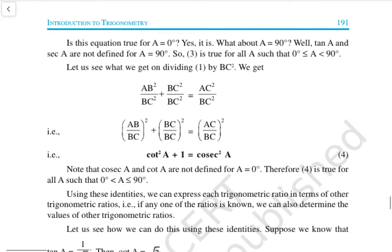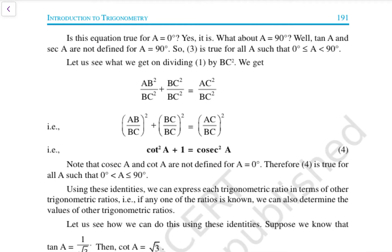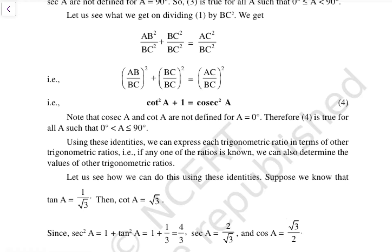Let us see what we get on dividing by BC². When we divide by BC², we get AB²/BC² + BC²/BC² = AC²/BC², which gives cot²A + 1 = cosec²A. Note that cosec A and cot A are not defined for A = 0°. Therefore this identity is true for A such that 0° < A ≤ 90°.